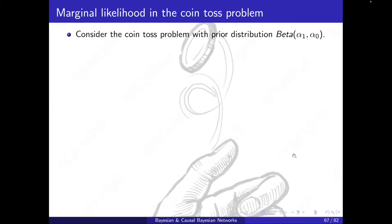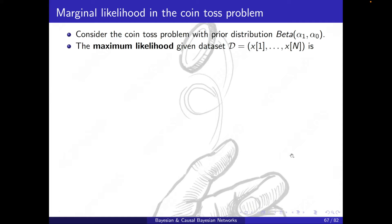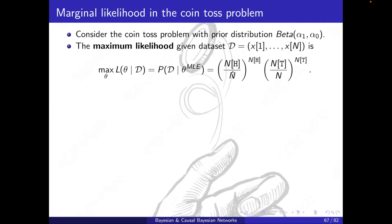In the coin toss problem with a beta prior distribution, the maximum likelihood we've already seen: for a dataset x1 to xn, the likelihood is theta^(n_h) times (1 - theta)^(n_t), and the MLE replaces theta with n_h divided by n.